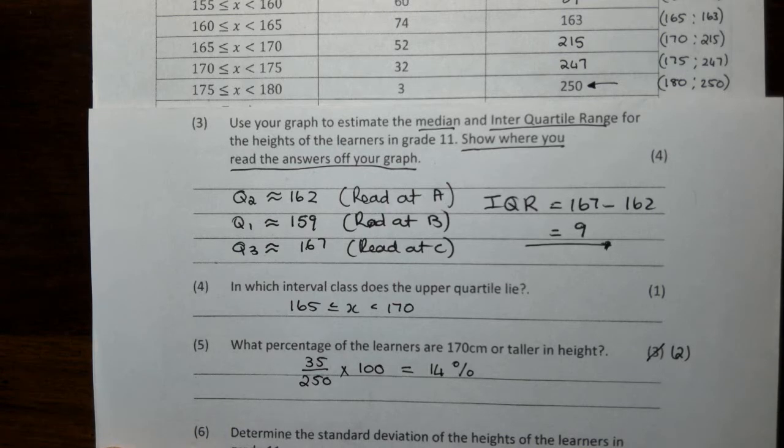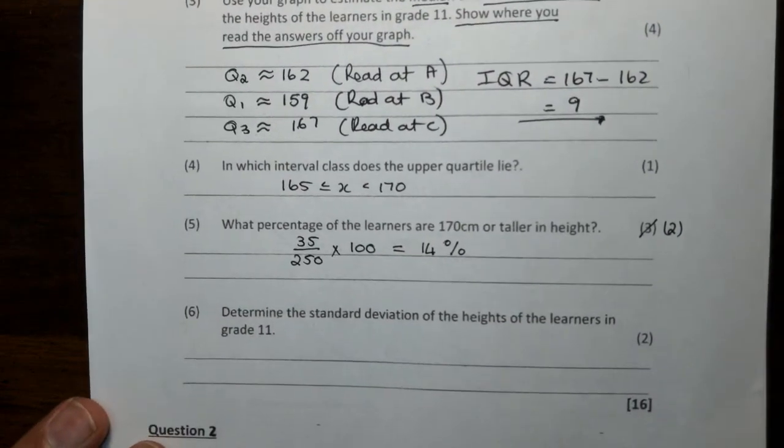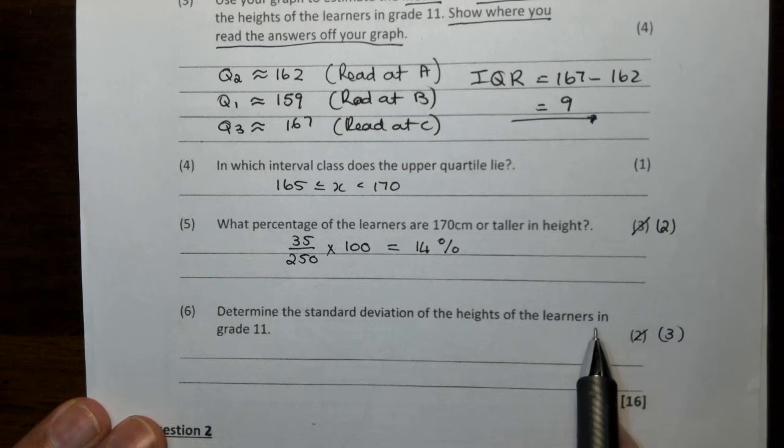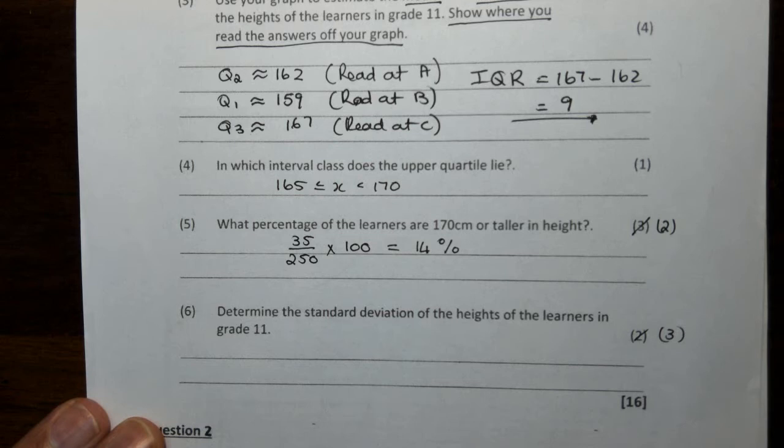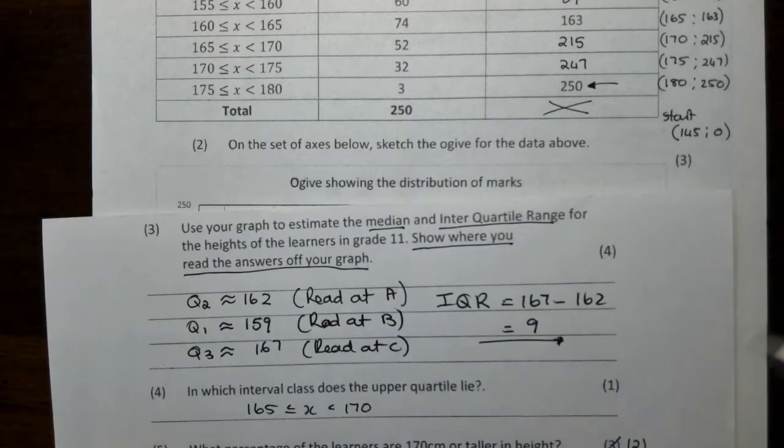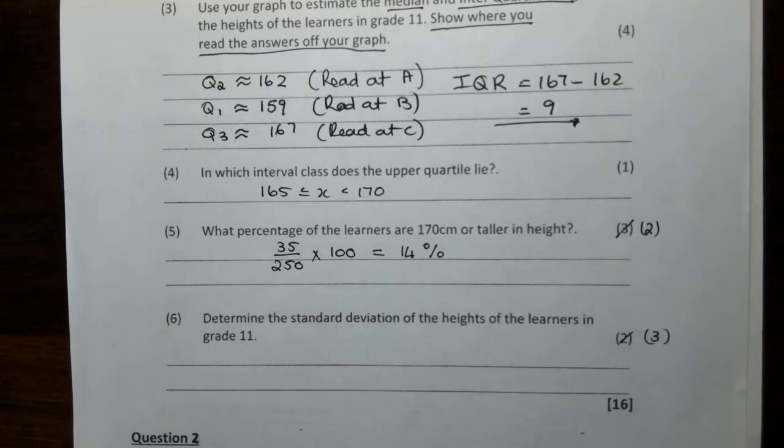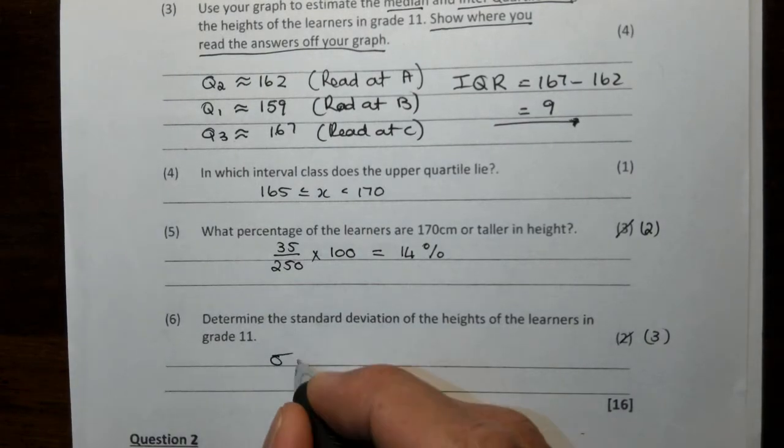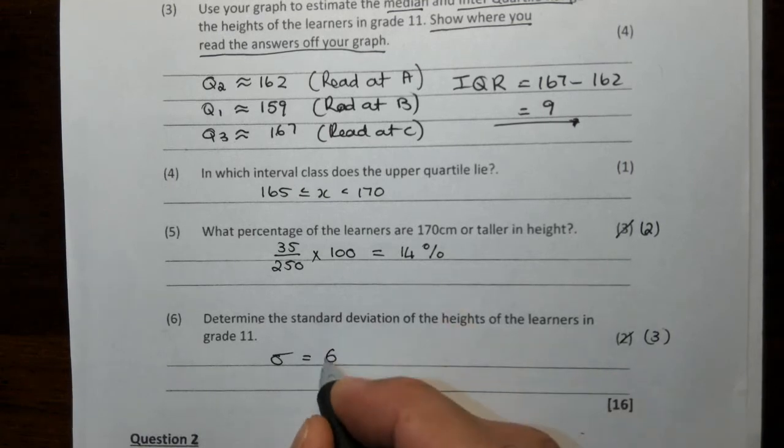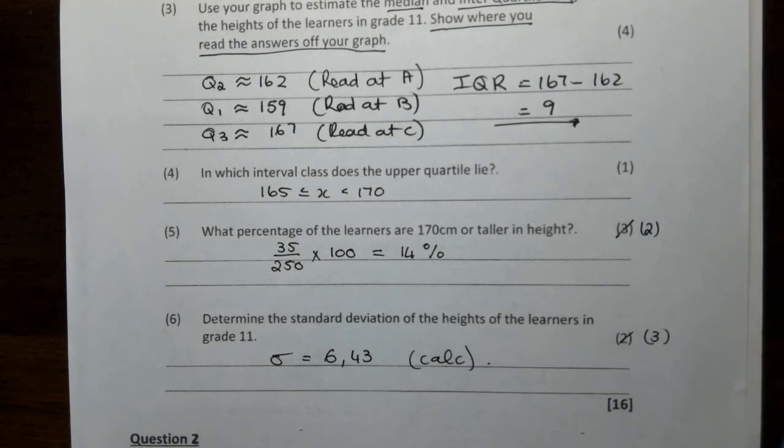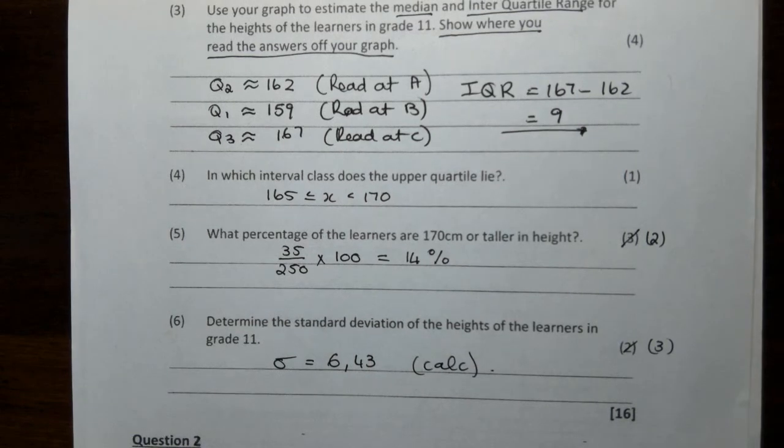Number six says determine the standard deviation of the heights of the learners in grade 11. This is pure calculator work. You put your data items in your calculator and tell it to determine the standard deviation. The standard deviation is 6.43. This is seriously just calculator work. Remember the catches are to use your right-hand limit and to ground your graph on the left side.